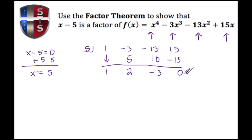That last number is our remainder. We have a remainder of 0, so X minus 5 is indeed a factor of this polynomial.